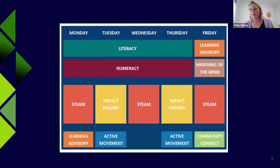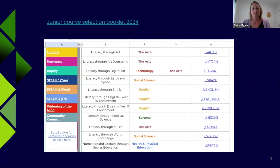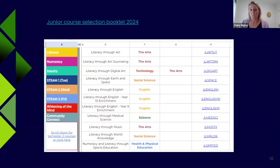We have 'Widening of the Mind' and 'Community Connect'. A lot of our subject-based language subjects come through Widening of the Mind — a chance for kids to learn more about different things they're interested in or following their passions. This is a screenshot of the literacy options: at year nine and ten, these are all the subjects offered in semester one for literacy — sometimes combining one subject area, sometimes combining another. This really relies on student-led decision making; these kids need student agency to pick what they're going to do.